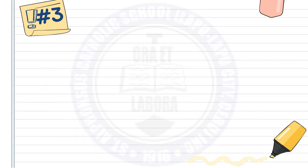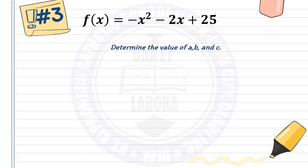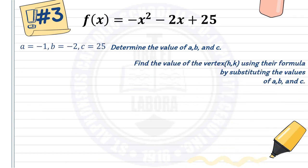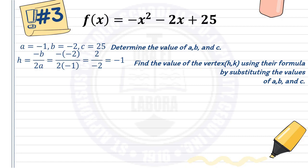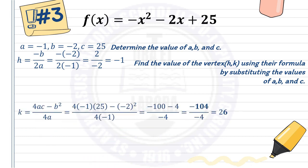Example number 3: f of x equals negative x squared minus 2x plus 25. Determine a is negative 1, b is negative 2, and c is 25. Finding h: h equals negative b over 2a. Substituting gives negative of negative 2 over 2 times negative 1, which is 2 over negative 2. So h is negative 1.